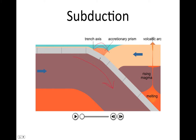Sometimes volcanic island arcs are slammed onto the edges of continental lithosphere, and that convergence also causes the formation of mountains. So here we have a volcanic island arc, and eventually it gets slammed onto the edge of the continental lithosphere, and that results in the formation of mountains.